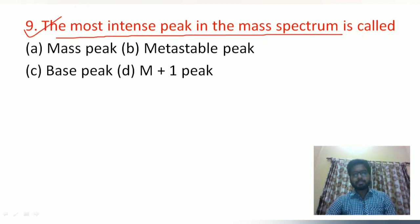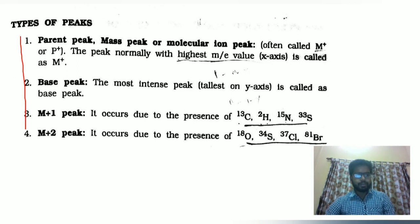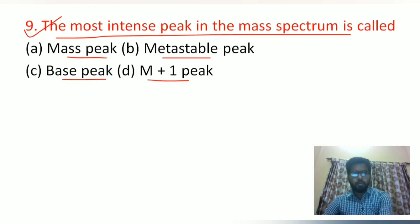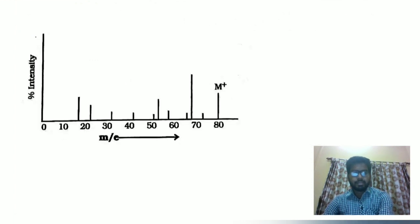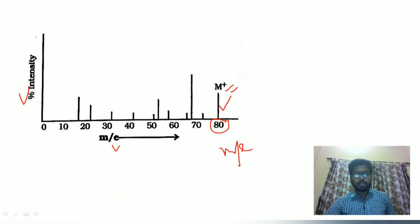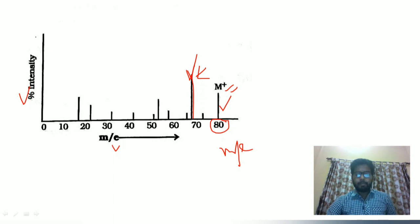The ninth question: the most intense peak in the mass spectrum is called: mass peak, metastable peak, base peak, or M+1 peak. The molecular ion peak (parent peak) is the peak with the highest m/z value. The base peak is the most intense peak in the mass spectrum. These are distinct — the base peak is not necessarily the molecular ion peak. So the answer is base peak.